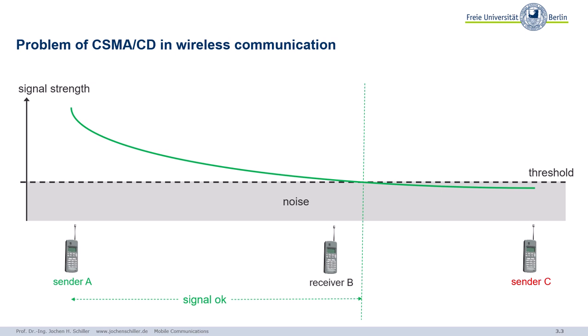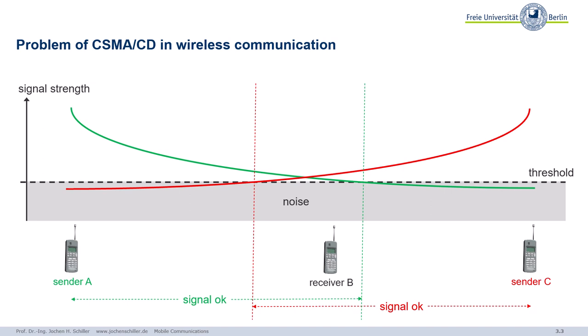So there is a certain transmission range around the sender where the signal is okay. In this example receiver B can not only detect but also receive data from A. But for sender C, the signal from A is nothing but noise — sender A just adds some noise to the already existing noise floor. Similarly, if C starts sending, the signal decreases strongly too. For sender A, C's signal is just noise, but for receiver B the signal from C is fine.